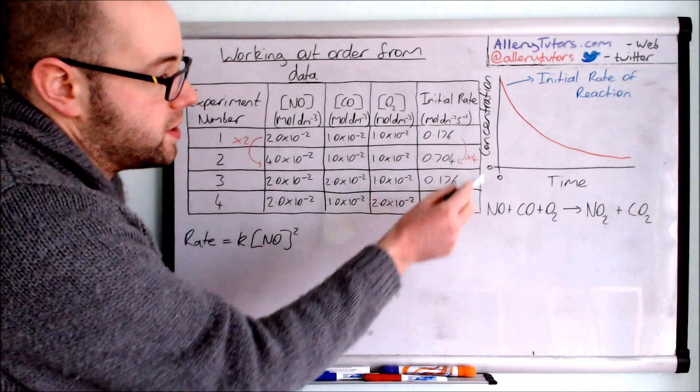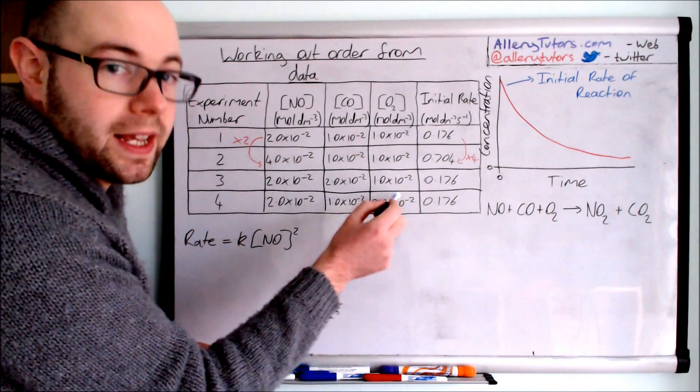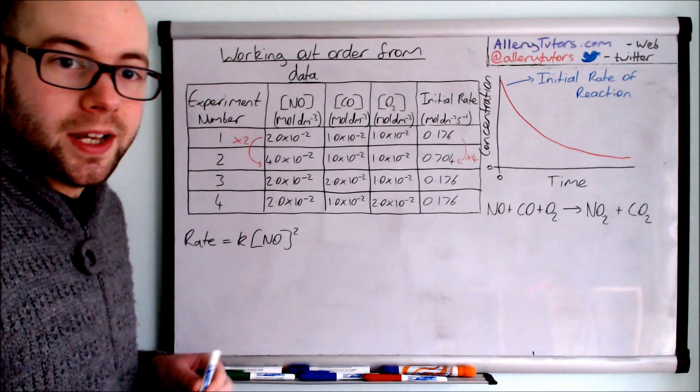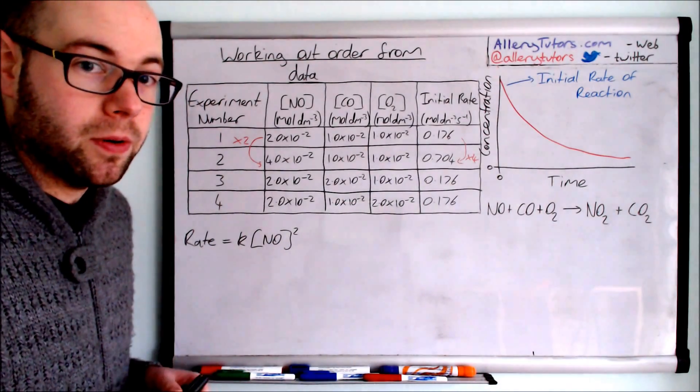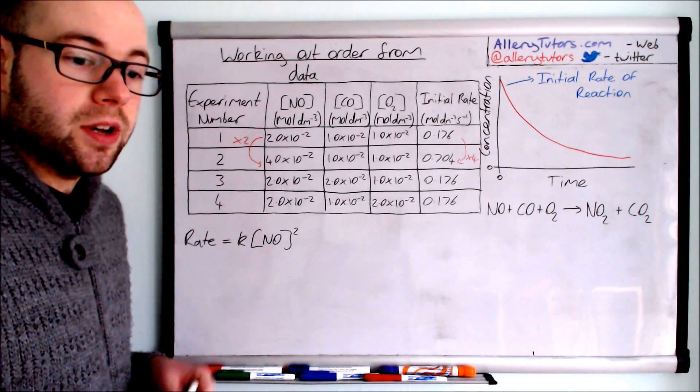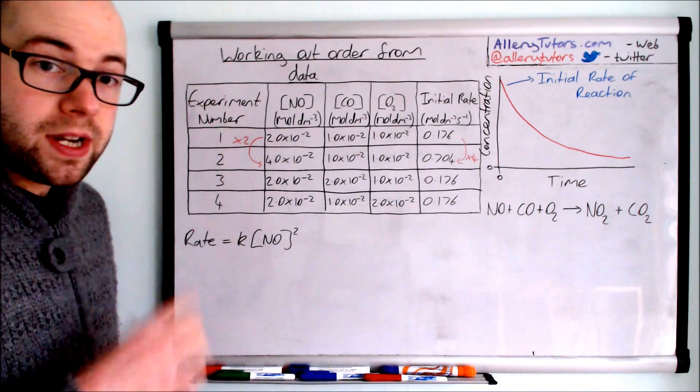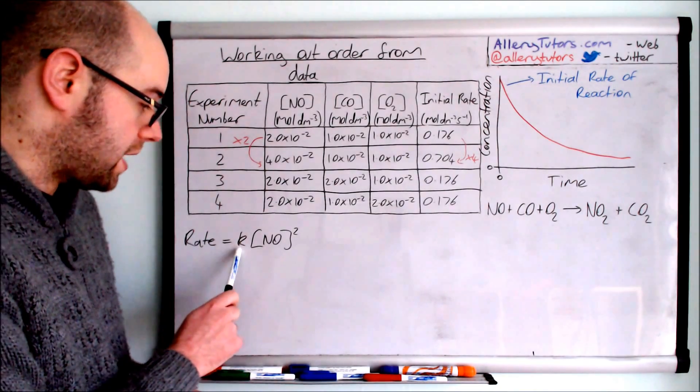0.176, 0.176. You can see here that obviously oxygen again has no effect on rates. We say that oxygen is zero order and therefore we don't include it in our rate expression. So what we have left is just this rate expression. The rate expression for this is rate equals k[NO]^2.